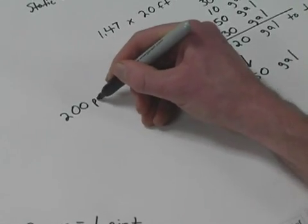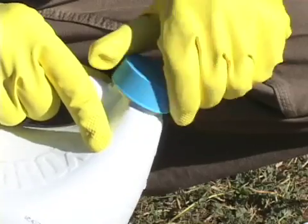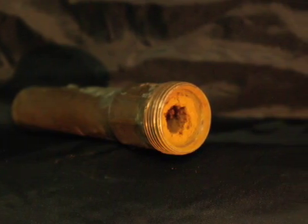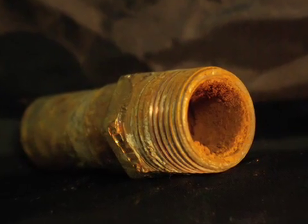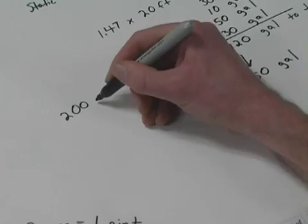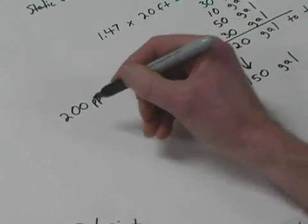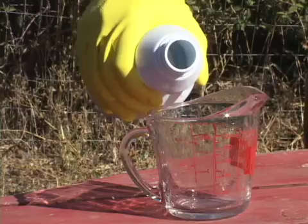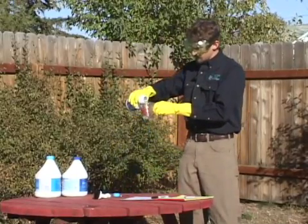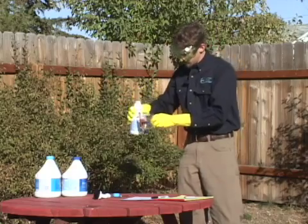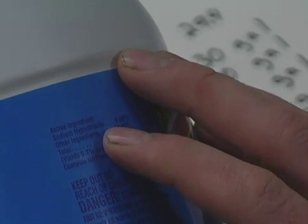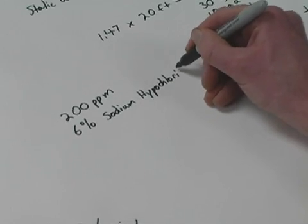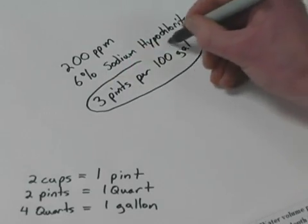Our goal here is to get all of the water in the distribution system up to 200 parts per million of chlorine to kill the bacteria. Higher chlorine concentrations may be necessary in special cases — for instance, if you have determined that you have iron bacteria fouling in your system. So next we need to determine how much chlorine to add to get 200 parts per million. Chlorine is available in a variety of forms including concentrated liquids, pellets, and liquid laundry bleach. People commonly use liquid laundry bleach, so that's what we will use for this demonstration. Do not use any type of scented bleach or any bleach mixed with detergent or other additives. Typical liquid laundry bleach is 6% sodium hypochlorite, which means we need to add at least 3 pints per 100 gallons to get 200 parts per million of chlorine.